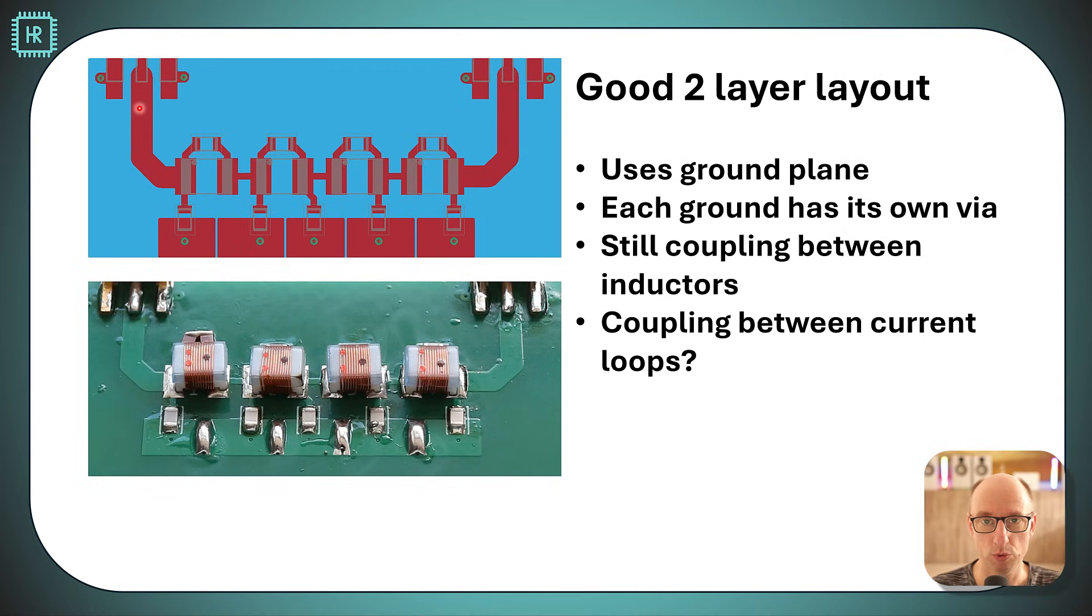Now I have to explain that a little bit further. As we've seen in video one, the ground return current follows exactly the path of the signal forward current. So when the signal current goes here and towards the VIA, the return current will follow an opposite path under the signal current.